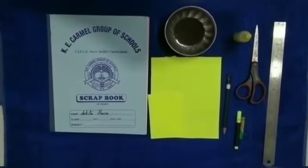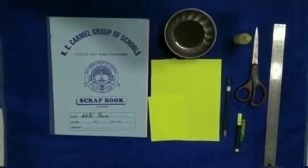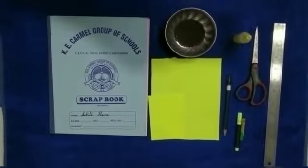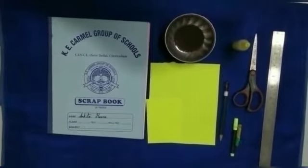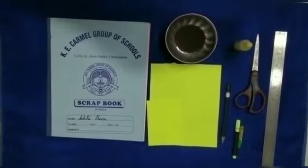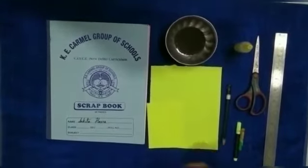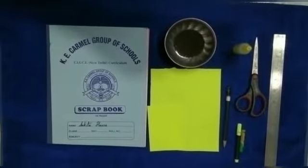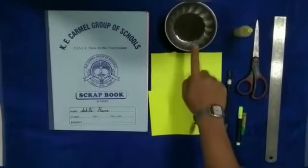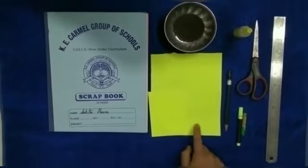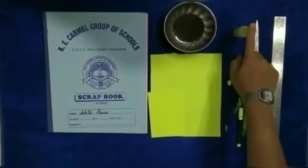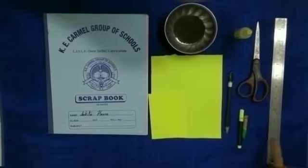Hello kids, welcome to our activity class. Hope you all are fit and fine. Today we will make a sunflower craft with tea leaves and yellow paper. For this activity we need a scrapbook, tea leaves, yellow paper, glue, scissors, scale,